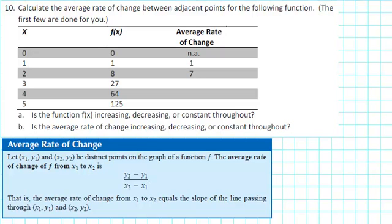Calculate the average rate of change between adjacent points for the following function. The first few are done for you. What we need to do is to recall our formula for the average rate of change. In order to find the average rate of change from one point to another point, we need to find the change in Y and divide by the change in X.